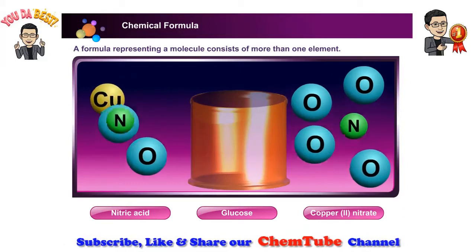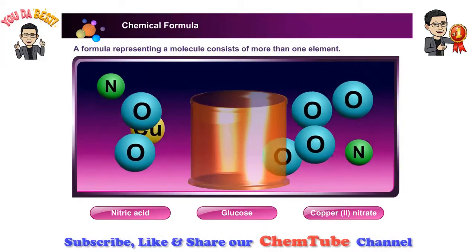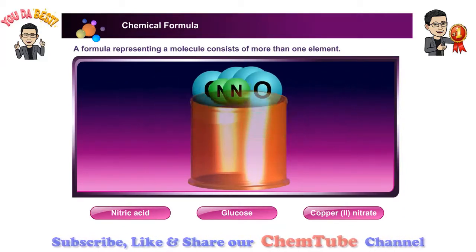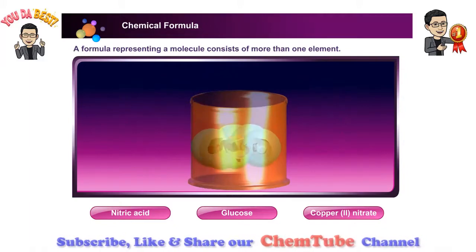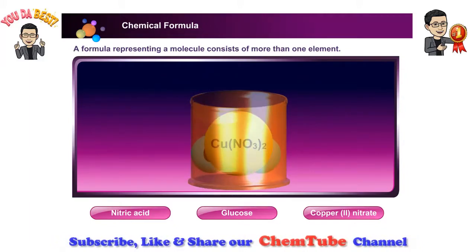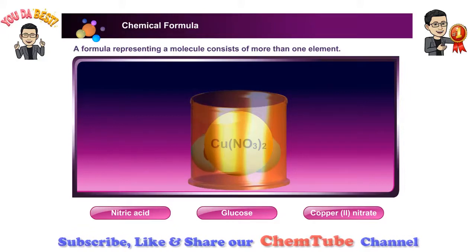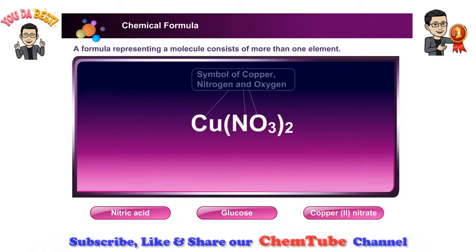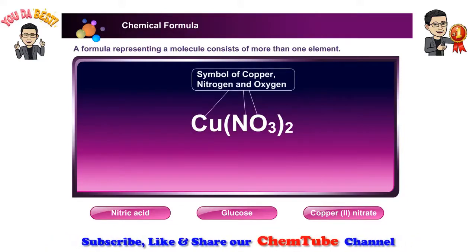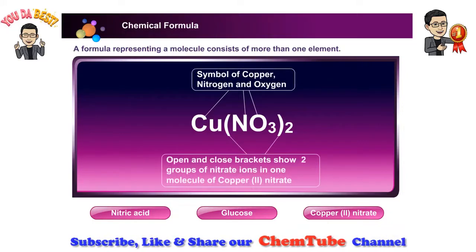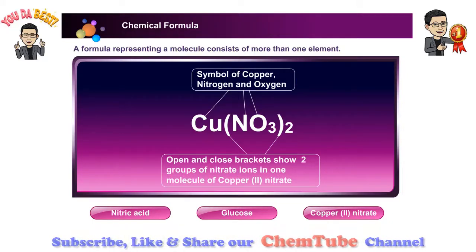One molecule of copper-2-nitrate consists of copper, nitrogen, and oxygen. Copper-2-nitrate is a combination of one copper atom and two groups of nitrate ions. Each group consists of one nitrogen atom and three oxygen atoms. Open and close brackets show two groups of nitrate ions in one molecule of copper-2-nitrate.